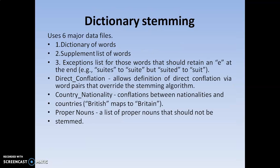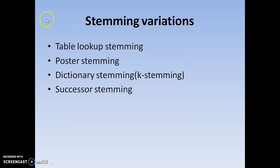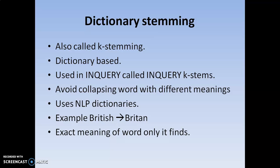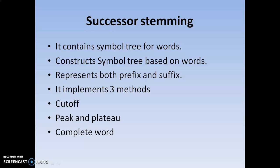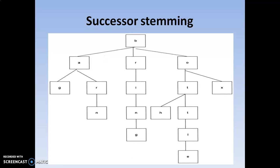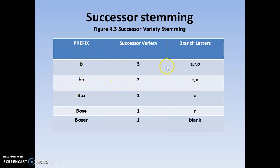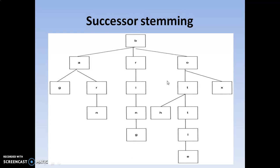This is called successor stemming. We have completed the variations of stemming. In this video, I completed dictionary stemming and successor stemming. Dictionary stemming contains six data files. Coming to successor stemming, you can apply three operations, and the entire words are organized in the form of a tree called the successor tree. We can identify the successor variety branch using this diagram and table.